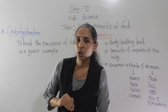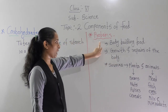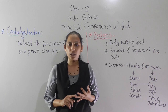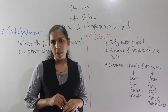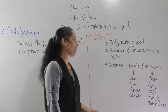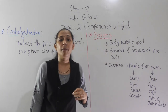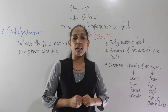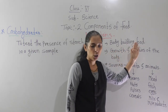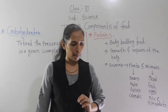Today we will move to the next nutrient — proteins. There are five main nutrients in our diet: carbohydrate, protein, fats, vitamins, and minerals. We have already completed carbohydrates, and today we will discuss proteins. Protein is necessary to build our body and gives us energy, that is why protein is called body building food.